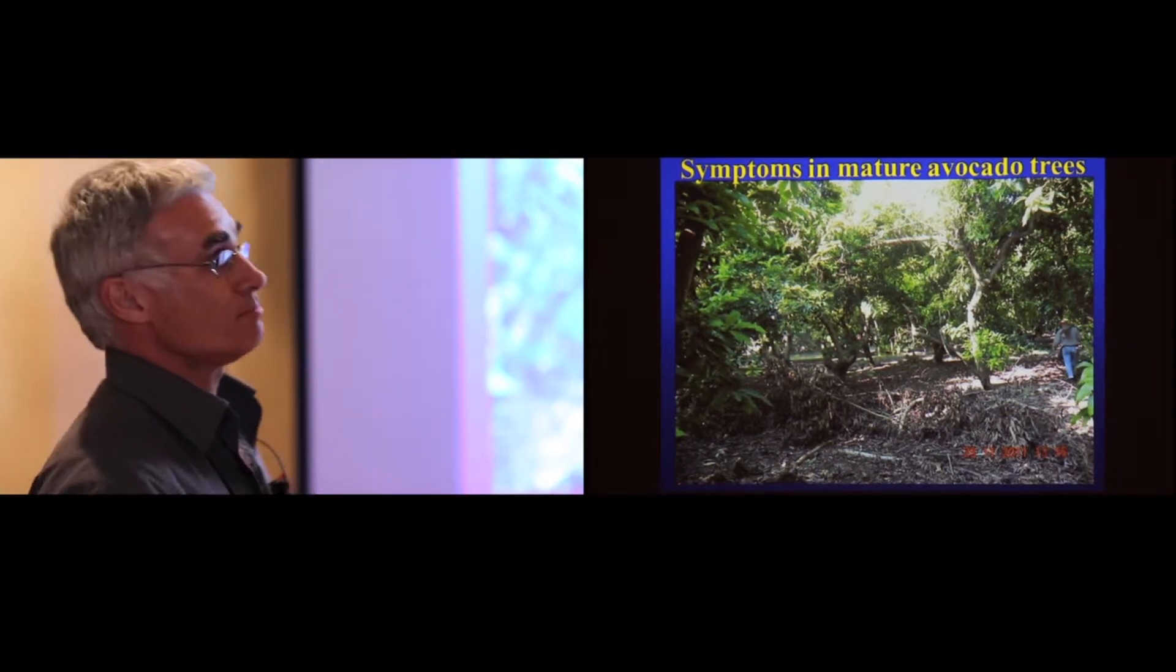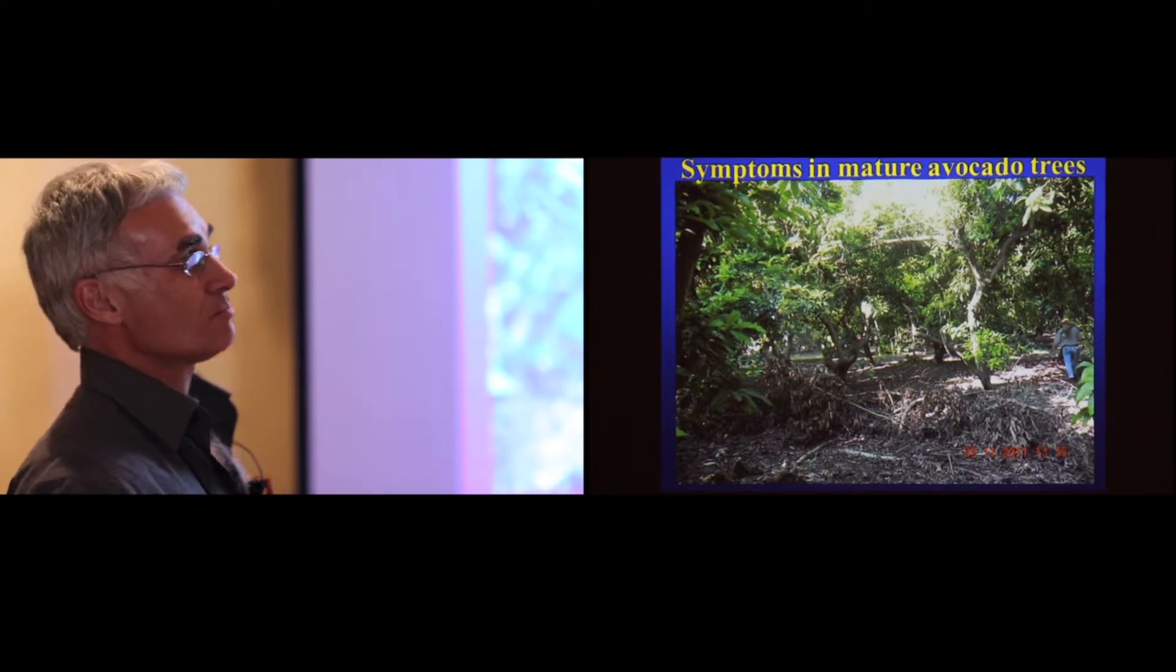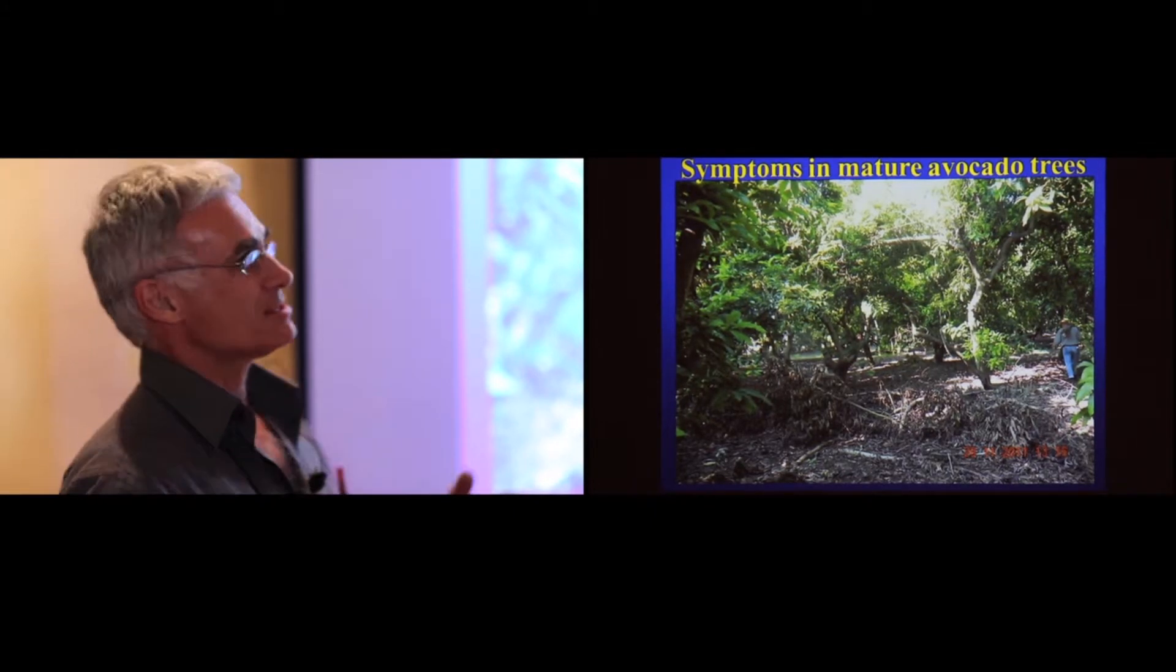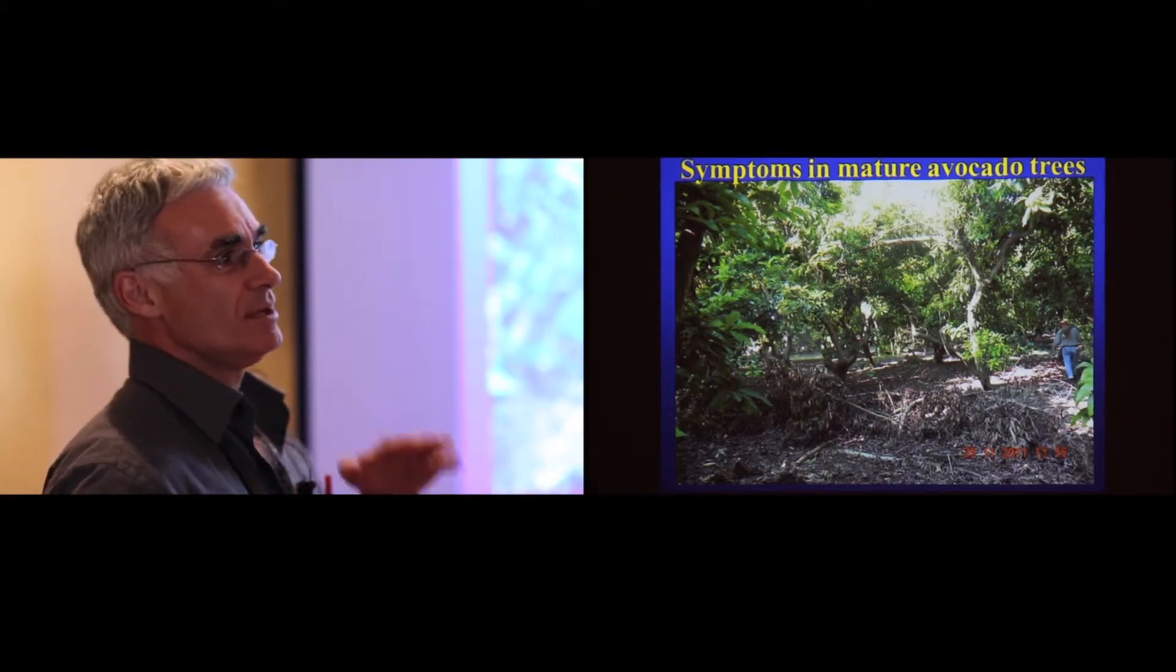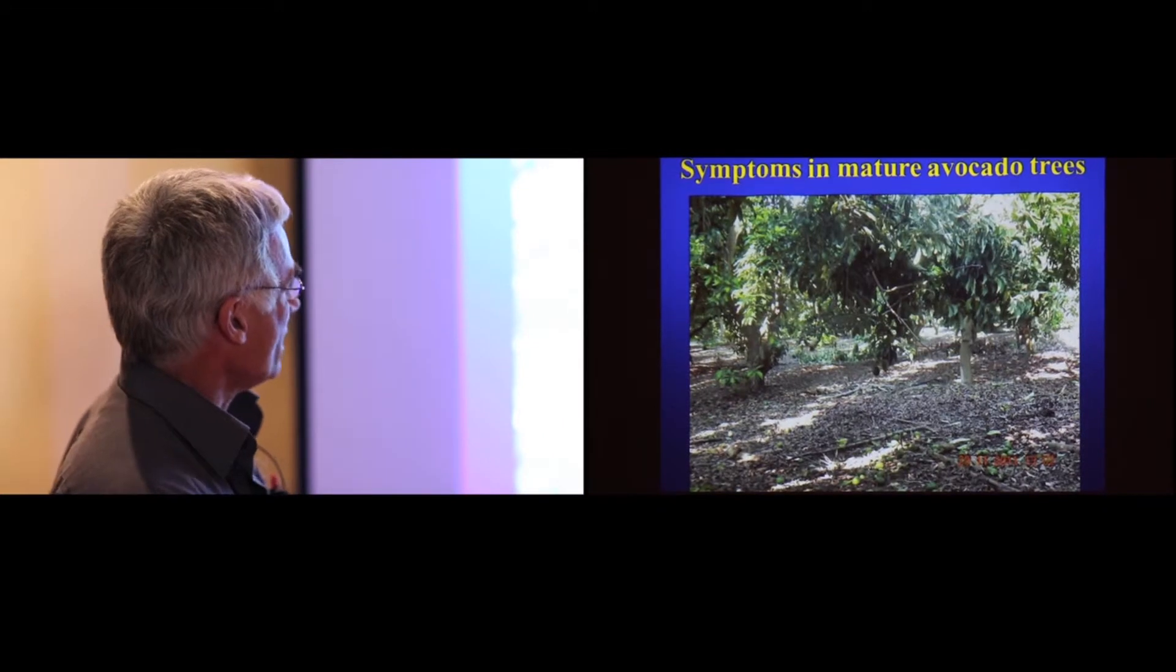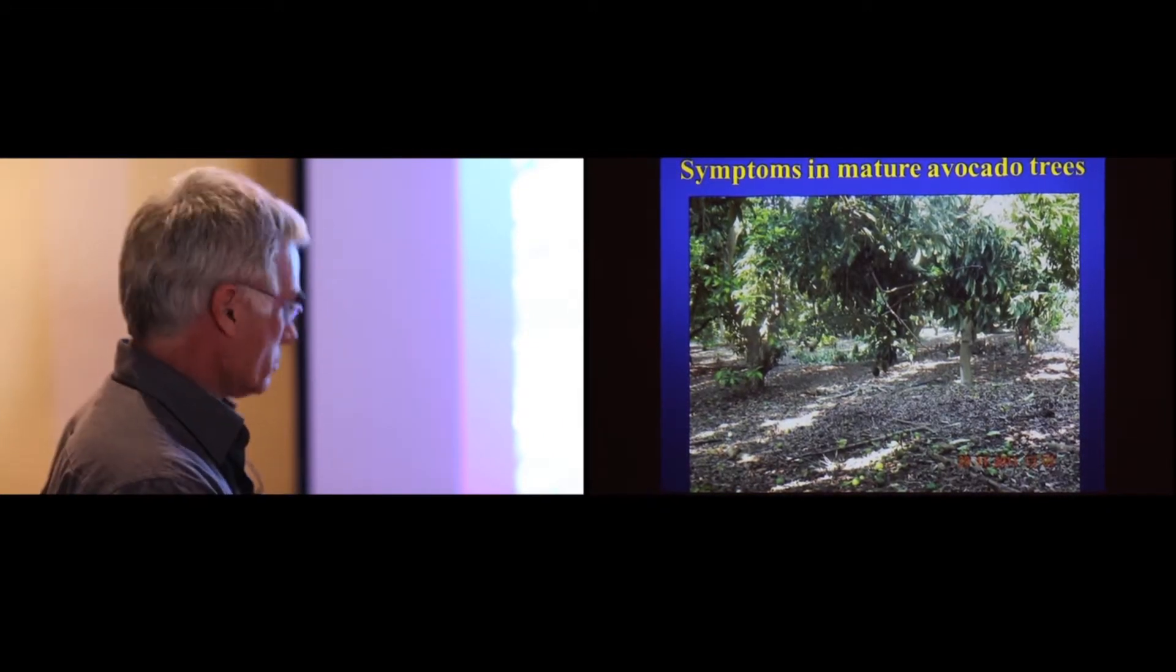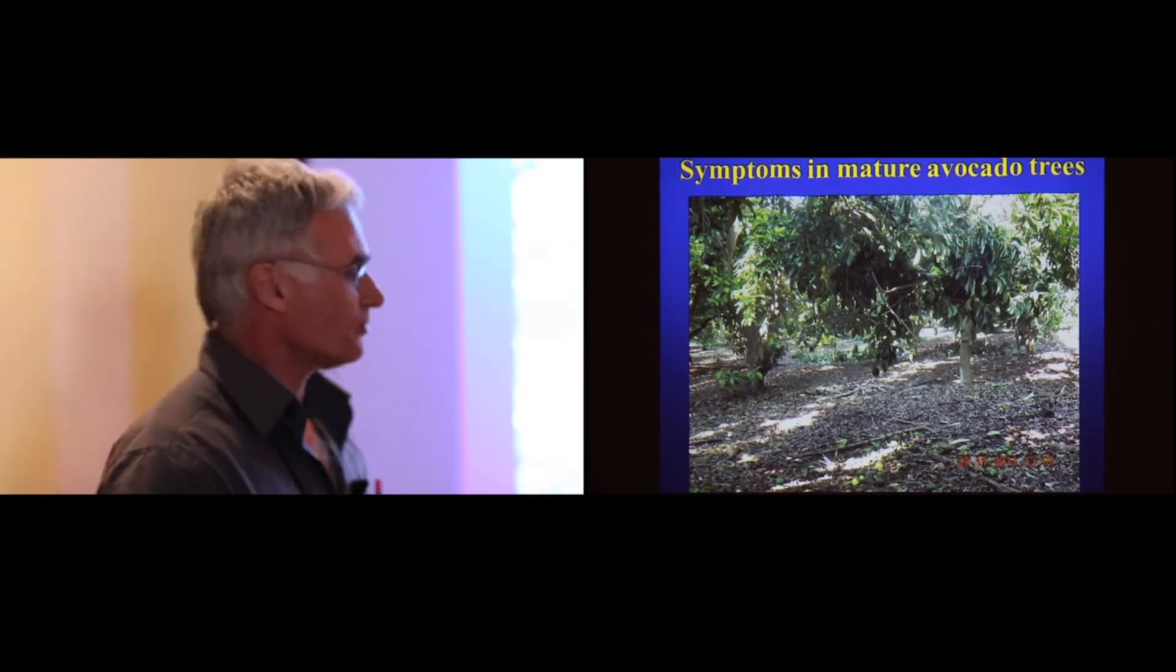Damage as such, broken branches, is very common. It's probably due to the excessive boring of the beetle and then the mechanical weight of the yield that just breaks those branches. Again, you see here loss of yield, premature drop of the fruit.